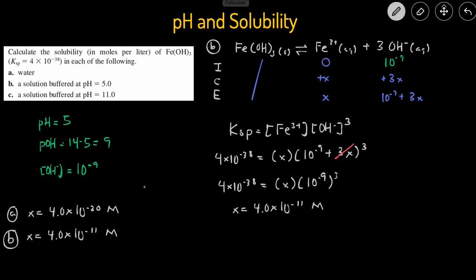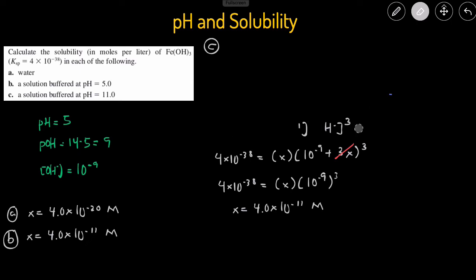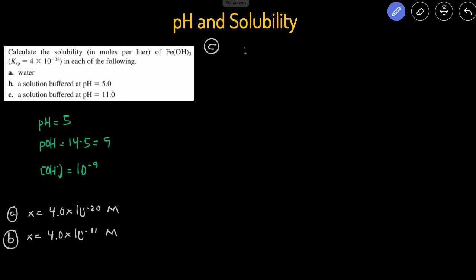And then lastly, for part C, I'm going to show you a shortcut for how we can do this if we don't want to set up an ICE table. So let's just get rid of all of this. And we'll use the shortcut to calculate the solubility at the particular pH. Okay, so for the shortcut, we're going to first look at how many ions are in each, how many of each ions there are in the compound. There's a single Fe, so we'll call that x. And then there's 3OH, so we're going to call this 3x.